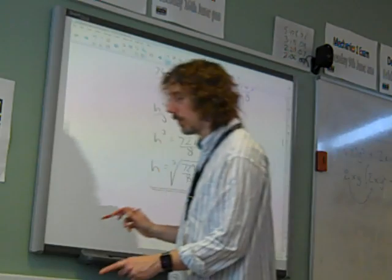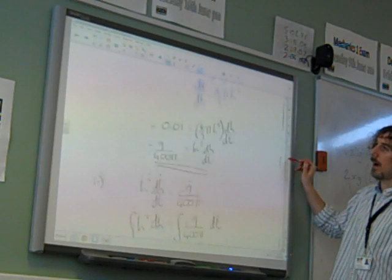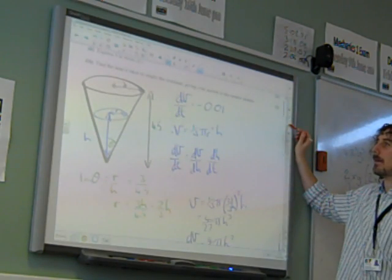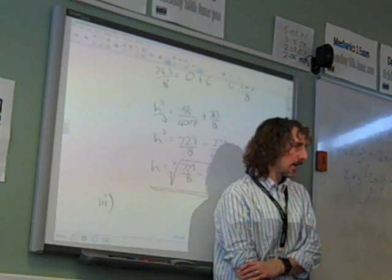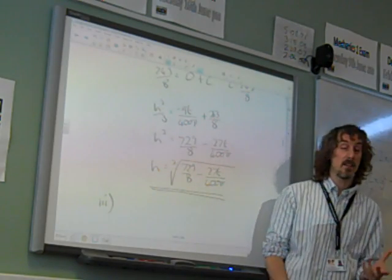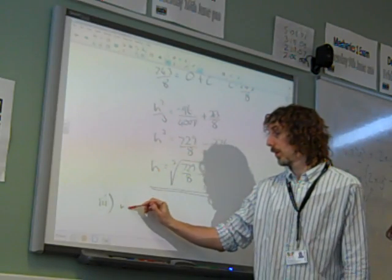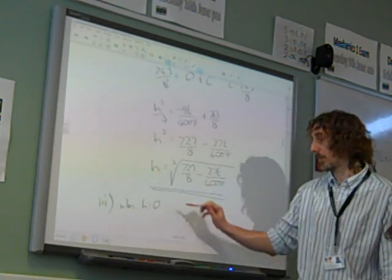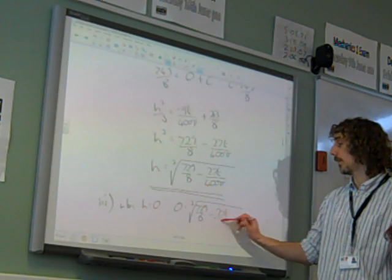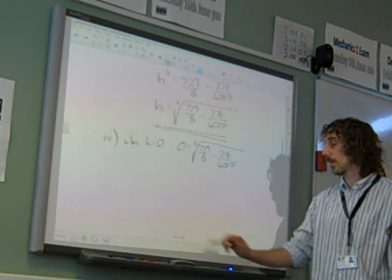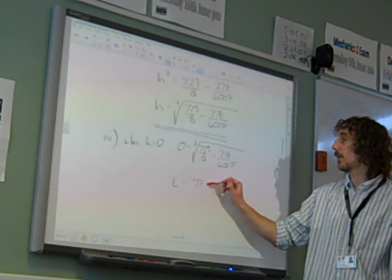Which leads us on to the final part of the question, which said, and it's a bit of a cheeky one at the end of this, find the time it takes to empty the container, giving your answer to the nearest minute. Well, if the container is empty, this is what they expected you to do. If the container is empty, that's the time when h equals 0. So we're looking, when h equals 0, what happens? That 0 is the cube root of 729 over 8 minus 27t over 400 pi.